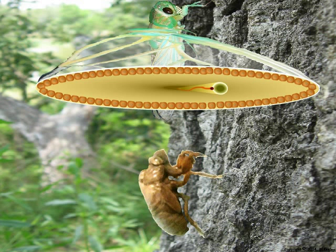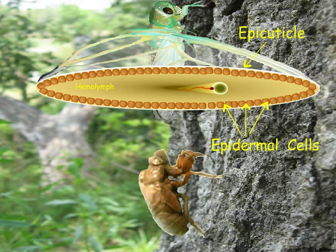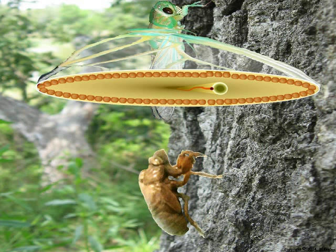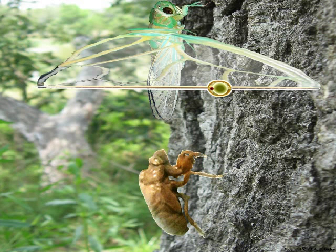The wing is a thin cuticle extension of the body wall consisting of an outer layer of epicuticle secreted by underlying epidermal cells. Initially, the upper and lower epidermal cell layers are separated by an internal space that is continuous with the open hemocele of the insect and is filled with hemolymph. Trachea and nerves are also present within the wing. After the wing expands, the two epidermal layers of the wing surface fuse and the epidermal cells degenerate, leaving the two layers of the epicuticle as a taut membrane.